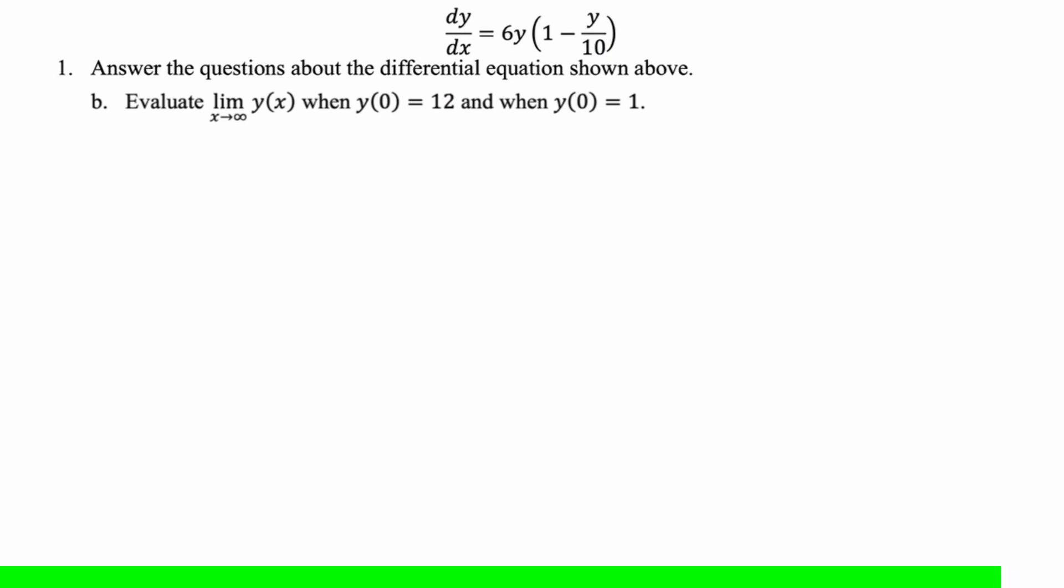Evaluate the limit as x approaches infinity of y of x, when y of zero is 12, and when y of zero is one. So it doesn't matter what y of zero is, you will get the same carrying capacity every time. And it is this number here, as long as that one is a one. So we have to have one minus y over L. So we know that 10 is going to be the limit. So I'm just going to write that up. So logistic is, I would say, free points. I mean, you got to know how to work with it. But once you do, everything is just free.